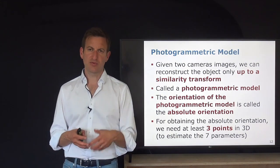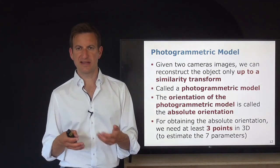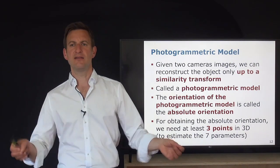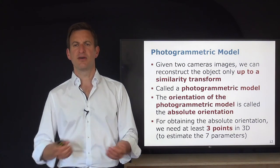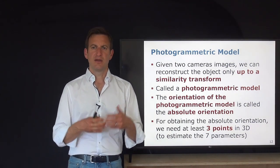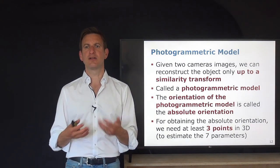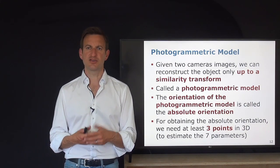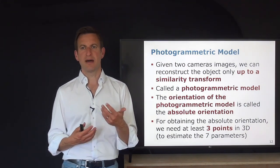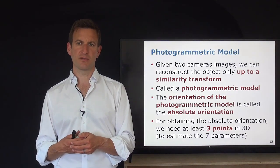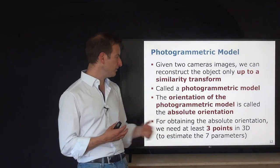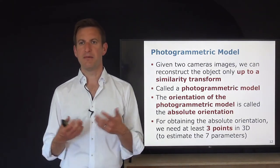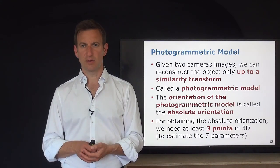We must distinguish relative orientation from absolute orientation. In this lecture, we focus on relative orientation — where is camera 2 with respect to camera 1 in terms of the five estimable parameters for the calibrated camera. For absolute orientation, we need knowledge about the scene, which can be provided by the location of three 3D points in the world.